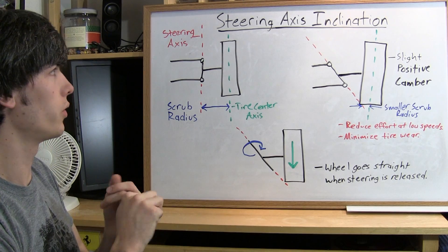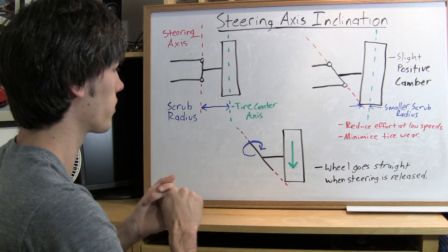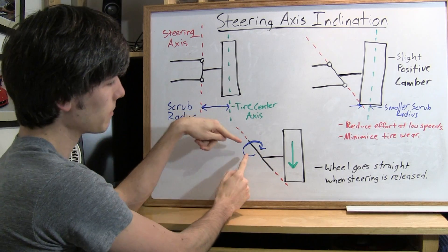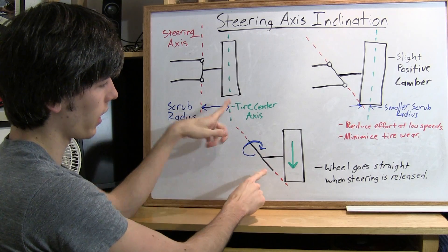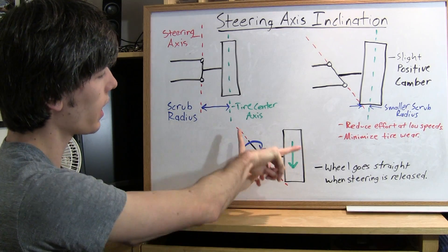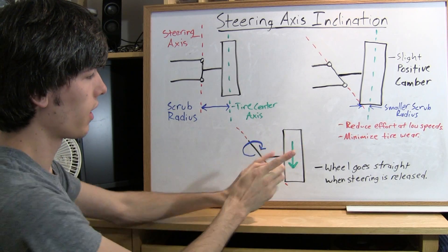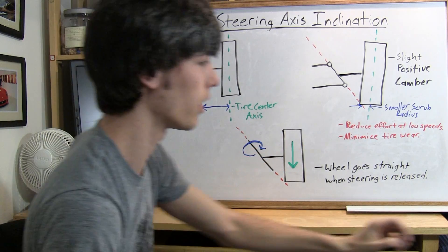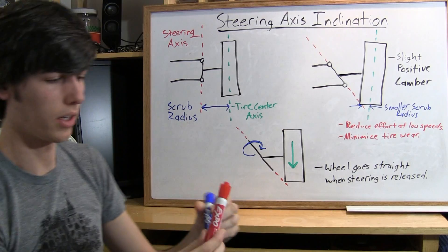Now there's one other benefit to having an inclined steering axis. As you can see if you have an inclined steering axis and you've got the shaft going to the tire as you turn that it's going to force the tire down. Let me give a small demonstration here.